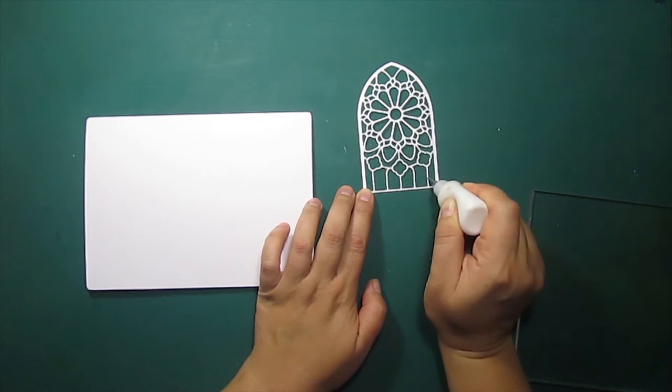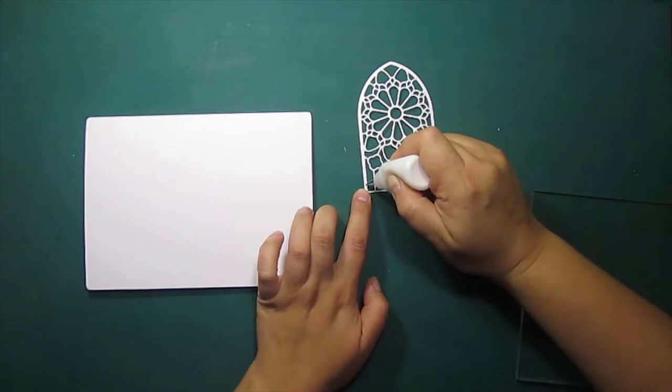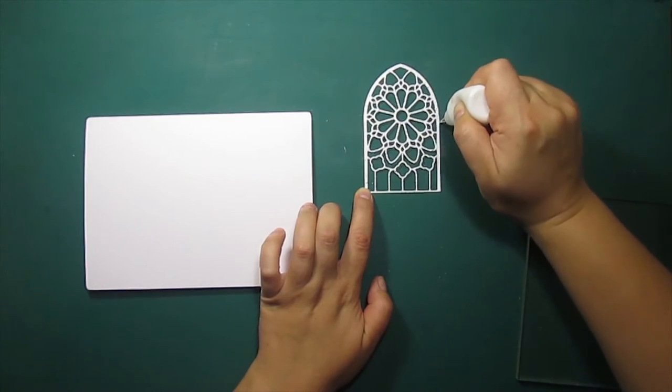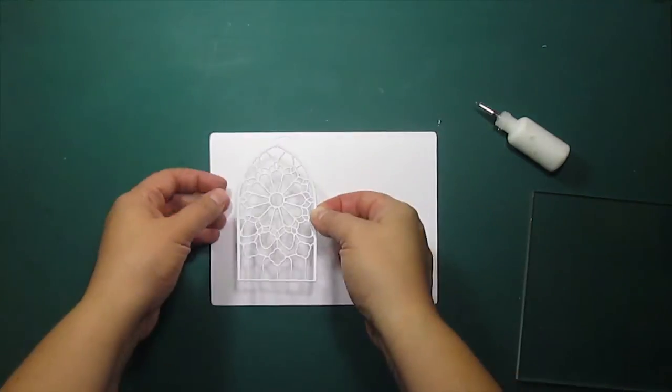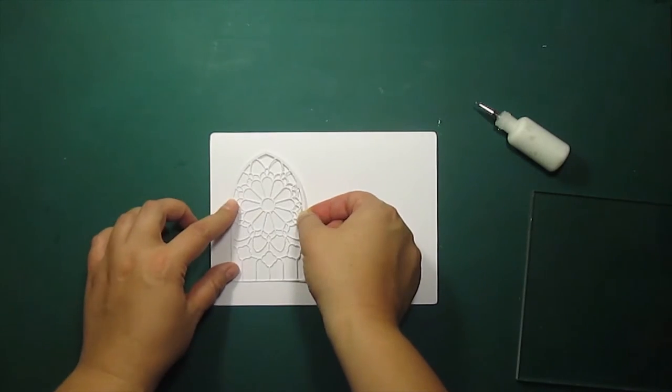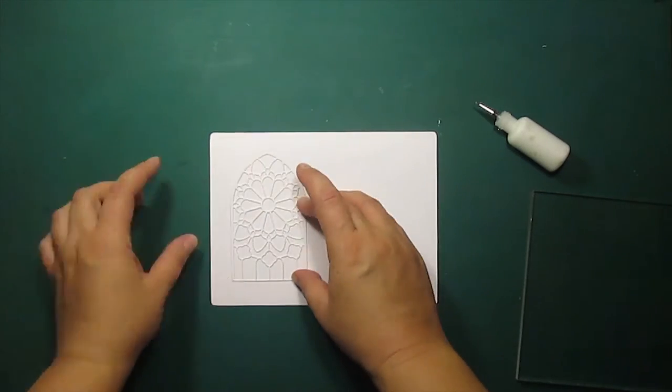Now I have to adhere my intricate die cut right onto the card base. I like using liquid glue. It's convenient, it's inexpensive and it's super strong but you can use any type of adhesive you prefer.